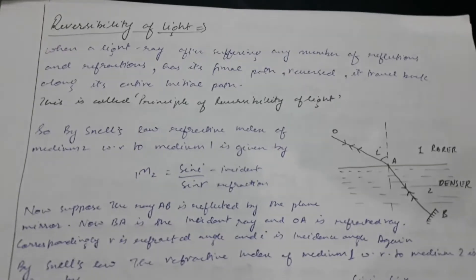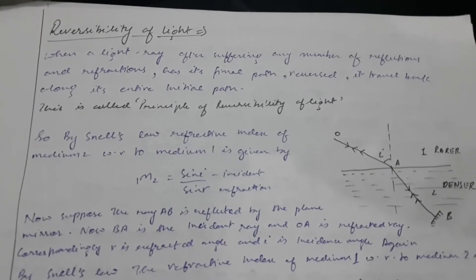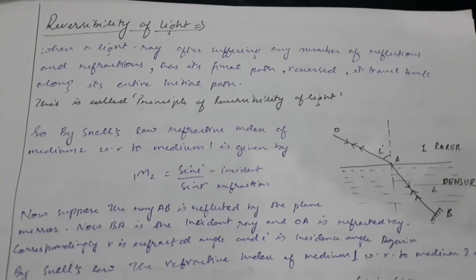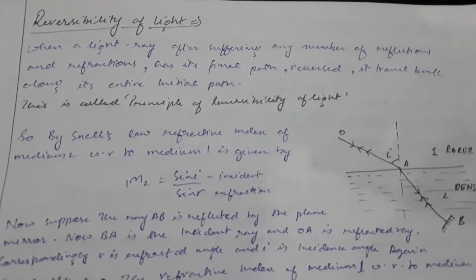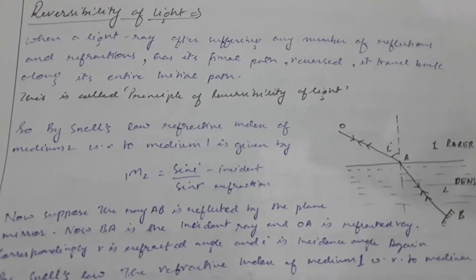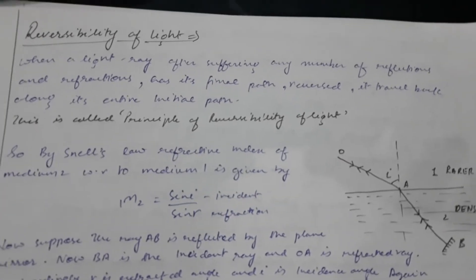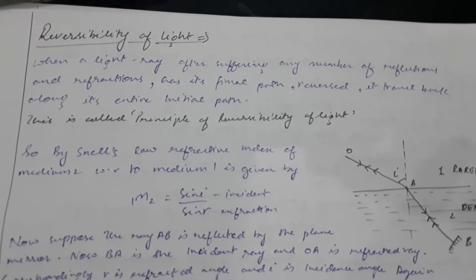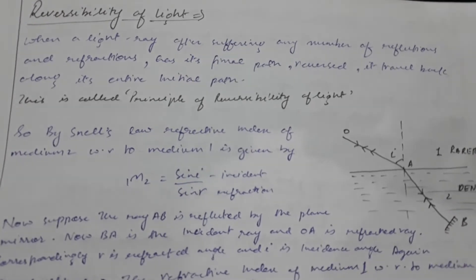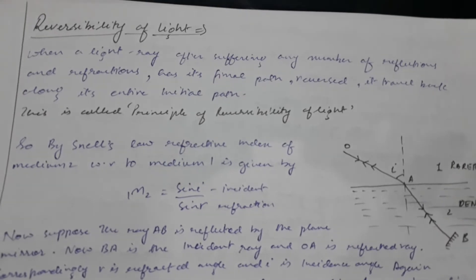Hello everyone, our today's topic is reversibility of light. When a light ray after suffering any number of reflections and refractions has its final path reversed, it travels back along its entire initial path. This is called the principle of reversibility of light.